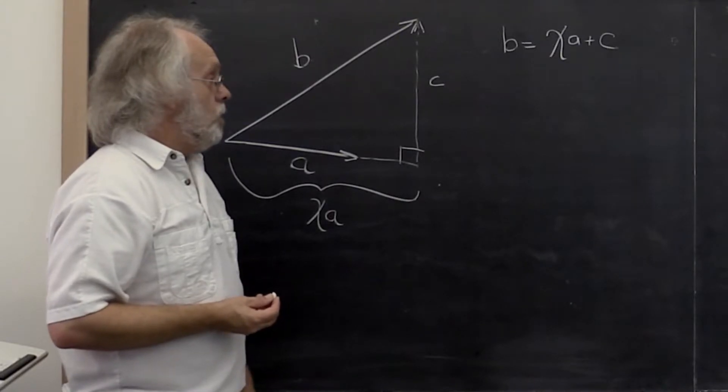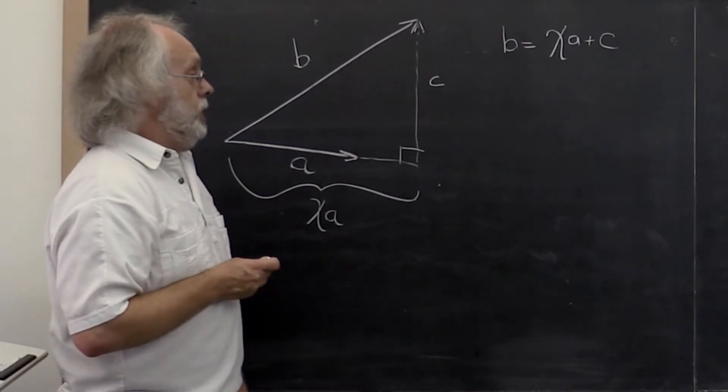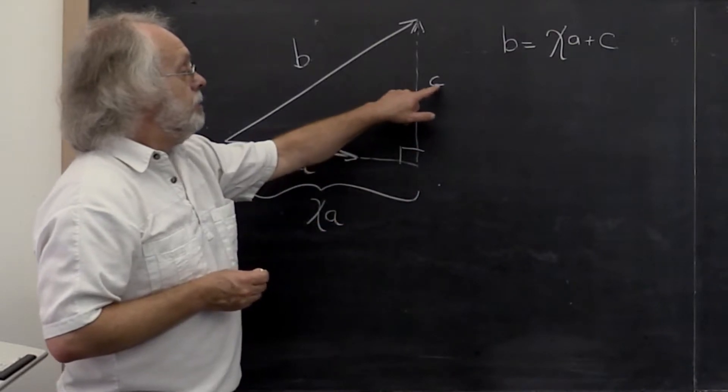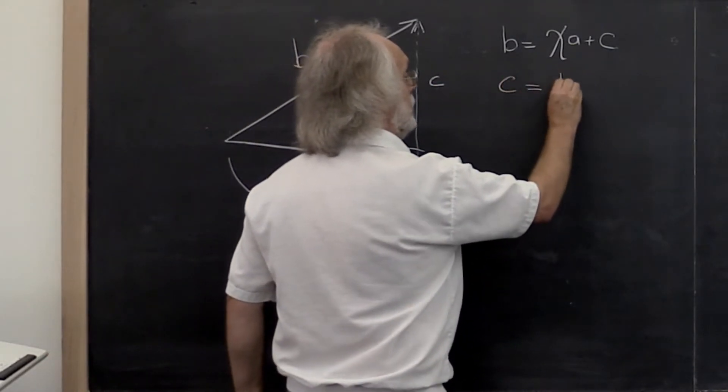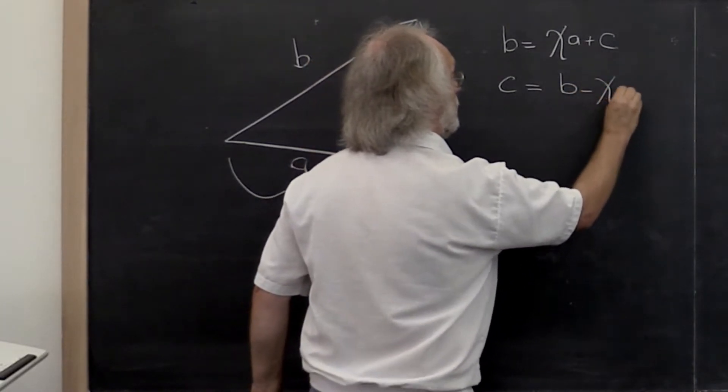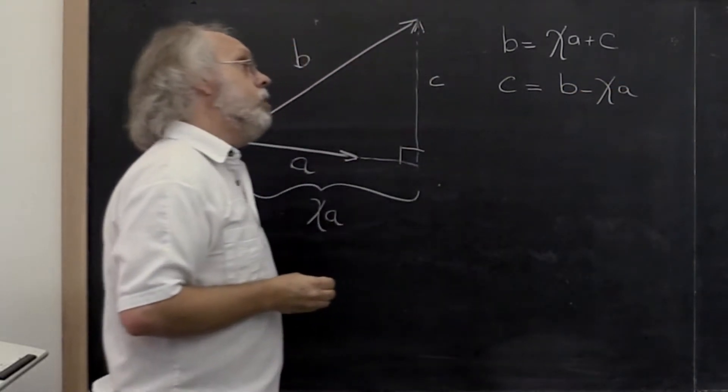Now we also know, therefore, that C is equal to B minus chi times A.